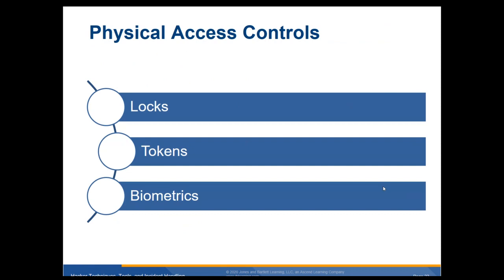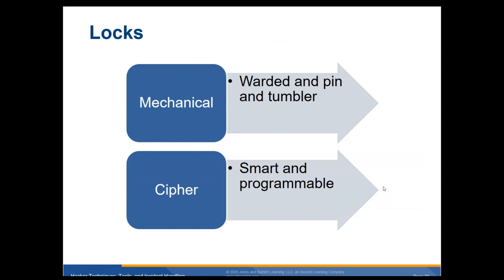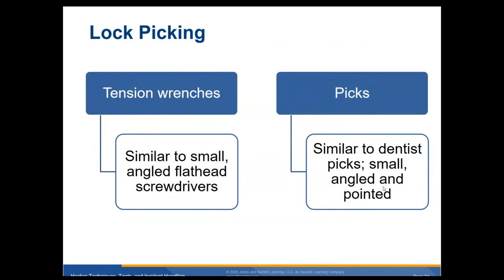Physical access controls: you can have locks, tokens, and biometrics — so how do you get into a door? Is it a regular key lock? Do you use tokens or biometrics? Locks come in two types: your regular pin-and-tumbler where you put a key in, or cipher locks where you have a keypad and touch in numbers. Some different types of lock picking: tension wrenches, where you slide a wrench in there and hold tension to it like the key turning — similar to an angled flathead screwdriver. And with the picks, similar to a dentist pick, you go along the tumblers and see if you can get it to release.